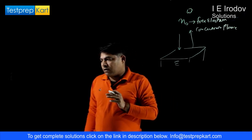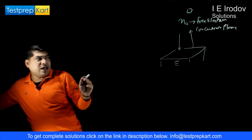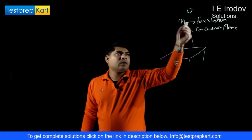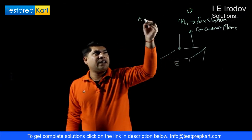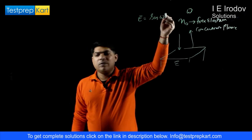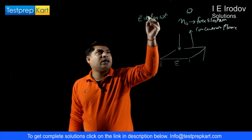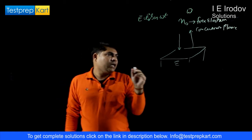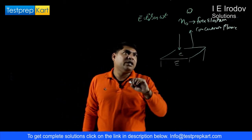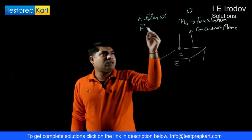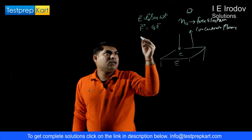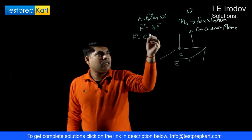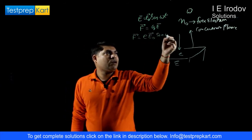Let us focus on the first part initially. If we have any electromagnetic wave with frequency omega, we can write the electric field vector as E = E0 sin(omega t). If there is any free electron inside this field, then it will experience a force F = qE, so the force experienced by an electron is equals to eE0 sin(omega t).